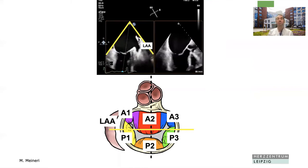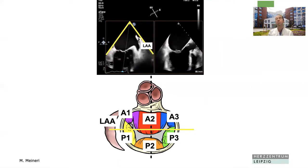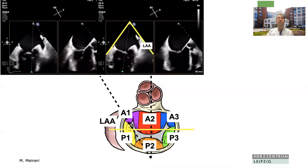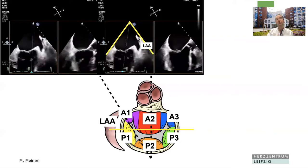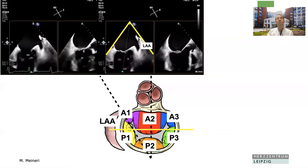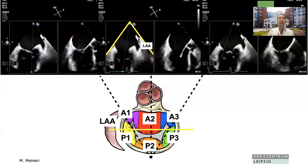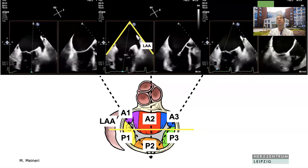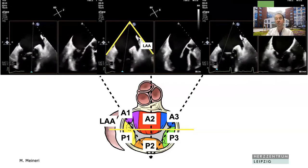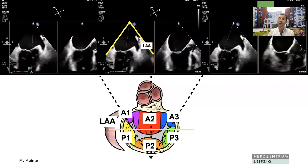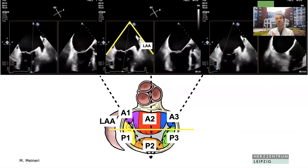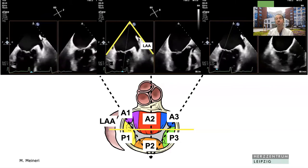The secondary plane — the long axis view — cuts through the center of the valve, so we see the two leaflets: A2 and P2. If we tilt the plane more laterally, we know we're seeing A1 and P1 in the long axis view. If we move the line more medially, we see the P3 segments. That's how we scan through the valve to assess exactly where the problem is and how we show it to our interventionalists.